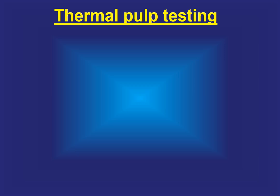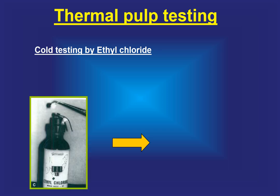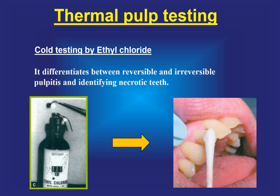Thermal pulp testing — cold testing by ethyl chloride — differentiates between reversible and irreversible pulpitis and identifies necrotic teeth. We take a small cotton pellet, impregnate it with ethyl chloride, and place it on the labial side of the tooth. When the patient feels severe pain, that means the pulp is not normal — it is inflamed.